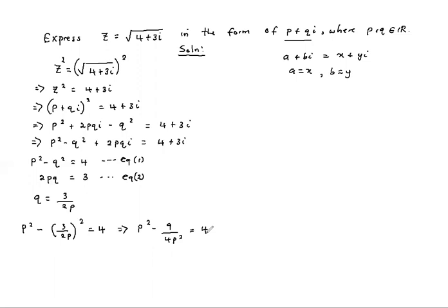If we multiply throughout by 4p squared, we get 4p to the power 4 minus 9 equals 16p squared. And if we rearrange it, we have 4p to the power 4 minus 16p squared minus 9 equals 0.